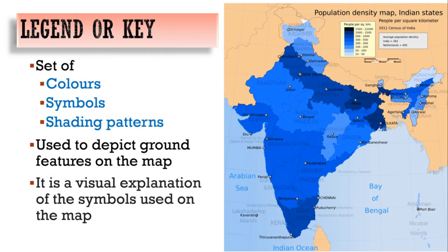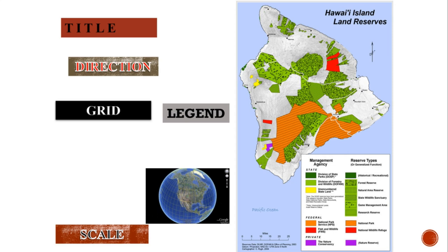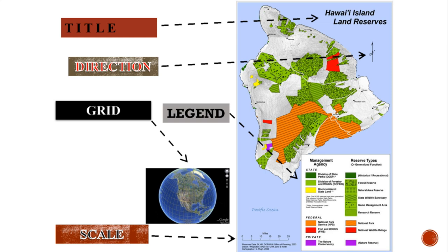The next element of a map is legend or key. It is a set of colors, symbols, or shading patterns used to depict ground features on the map — a visual explanation of the symbols used. So the major elements of a map are: title, direction, legend, grid, and scale.